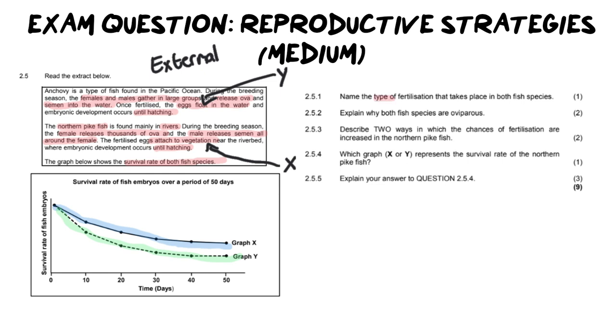Number one says, name the type of fertilization that takes place in both species. We already mentioned it earlier, it is going to be external. And we know that because they lay large amounts of eggs, and then semen is spread over them. So there's no intercourse happening. For our second question, it says, explain why both fish species are oviparous, and that is for two marks.